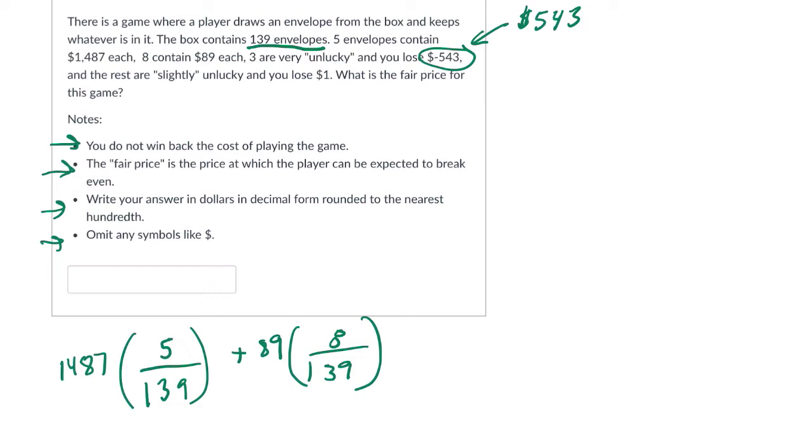And then the three unlucky ones. So you're going to lose $543. Okay, and that happens how often? There are three of them out of 139. And the rest are slightly unlucky, it says. You lose $1. So the rest, you lose $1. And how many are in the rest? Well, 139 minus 5. So 134 minus 8, 126 minus 3, 123. So there are 123 left out of 139.